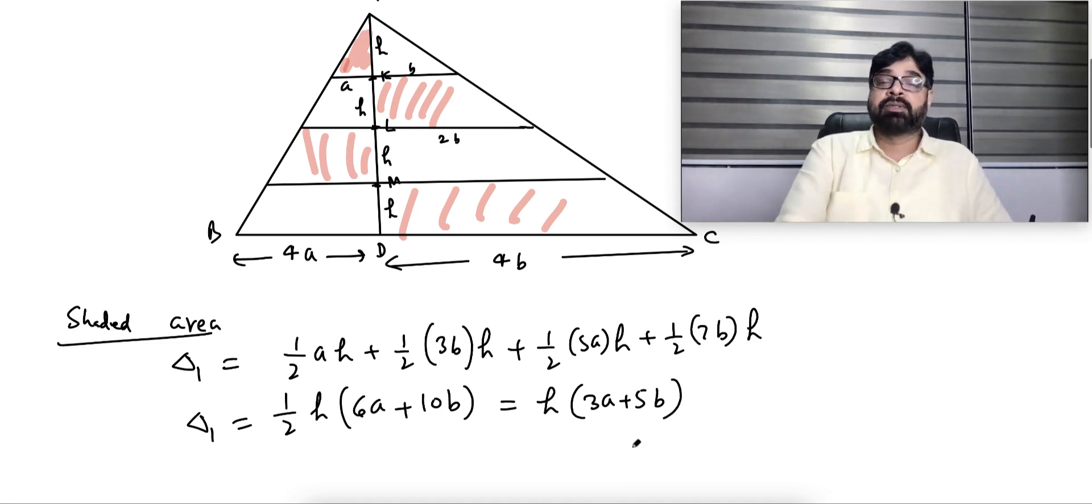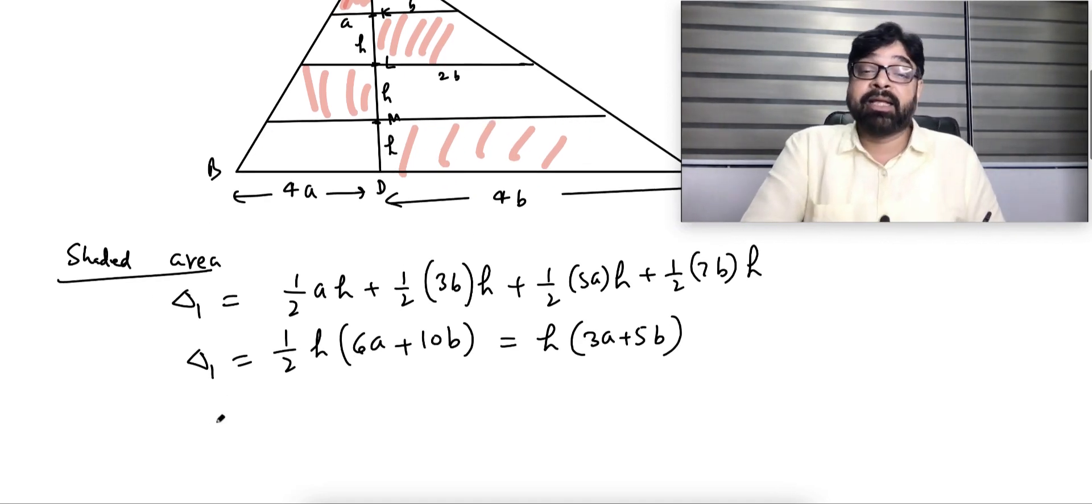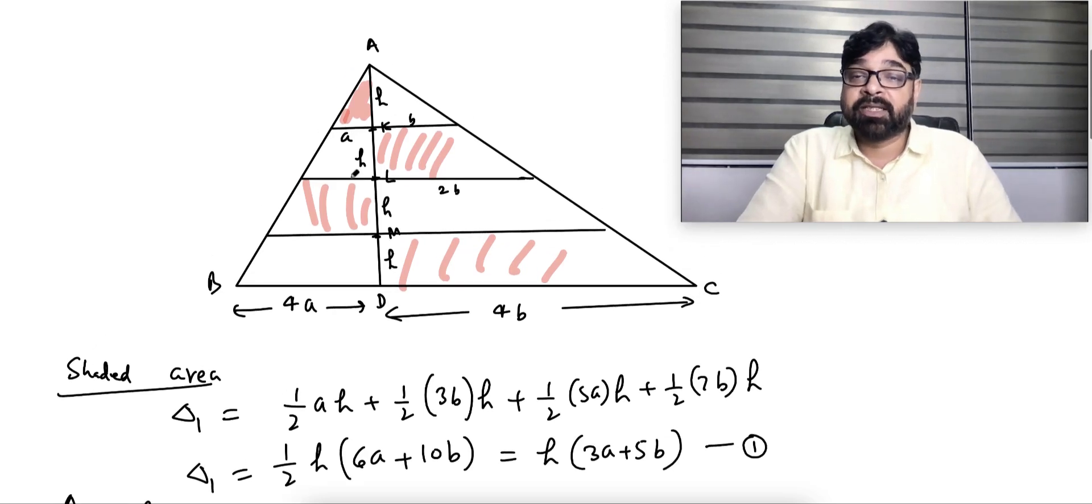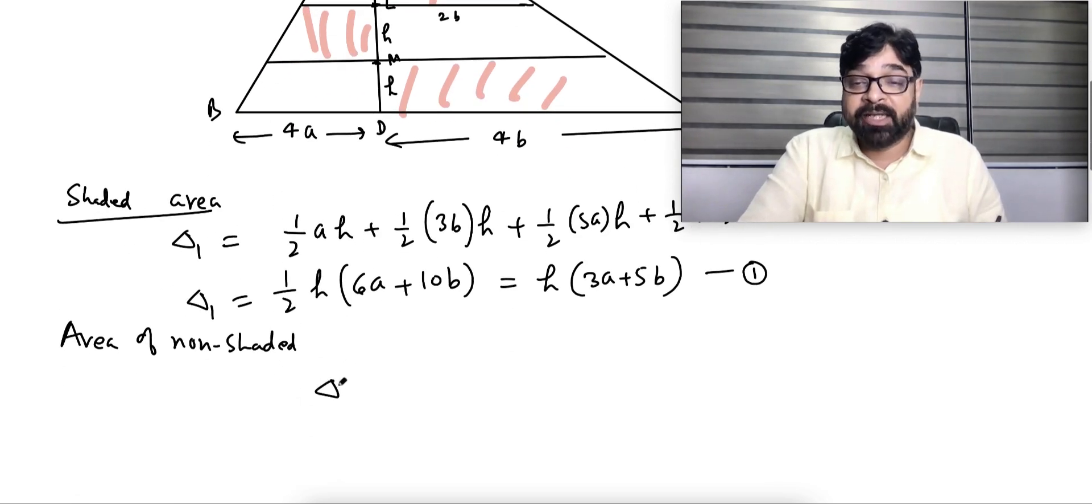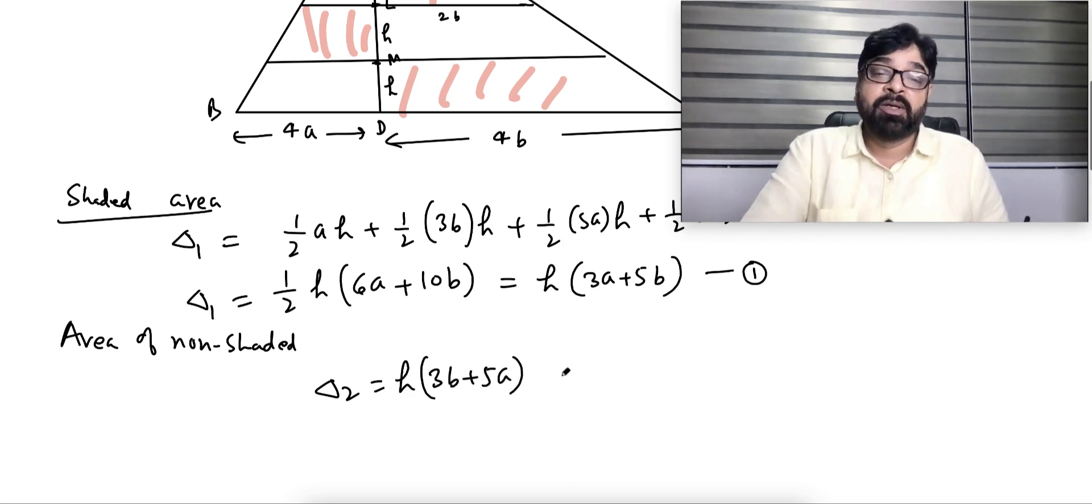Area of non-shaded: can we write directly? Yes, because they are symmetric pictures. Whatever this is, same thing here. This is b, only thing a will be replaced by b. Whatever this is, same thing here, only thing b will be replaced by a. So non-shaded area will be equal to h into 3b plus 5a.